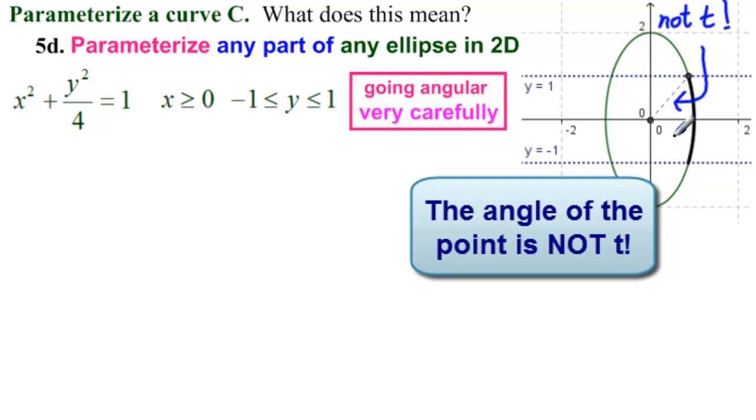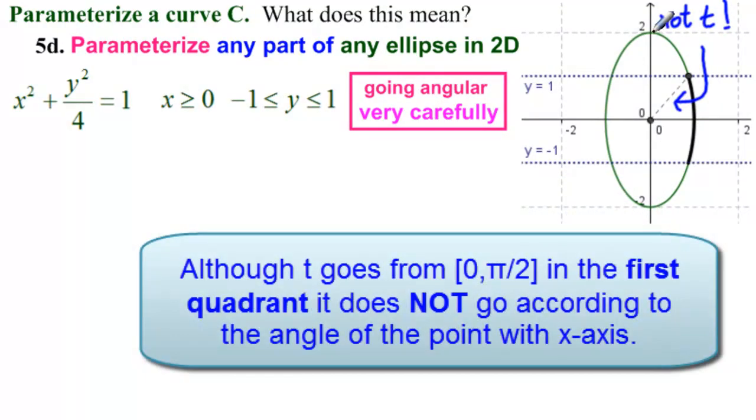This angle is not t. We'll find out how to find the angle. It's not difficult, but you should remember that although it goes from 0 to pi halves here, it doesn't go according to the angle. That's very important.